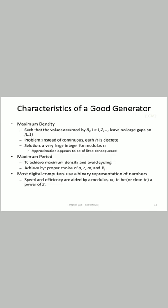Next, characteristics of a good generator. Whatever technique we use, maximum density is needed such that the values assumed by Ri leave no large gaps on (0,1). The problem is that each Ri is discrete rather than continuous; the solution is to use a very large integer for modulus m so the approximation appears to have little consequence. For maximum period and to avoid cycling, this is achieved by proper choice of a, c, m, and X0. Most digital computers use binary representation of numbers, so speed and efficiency are aided by choosing modulus m to be close to a power of 2.